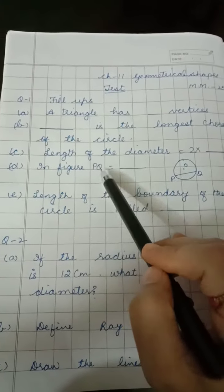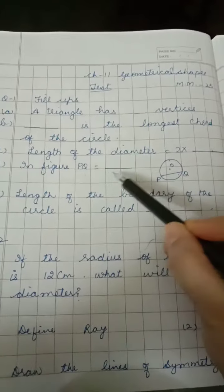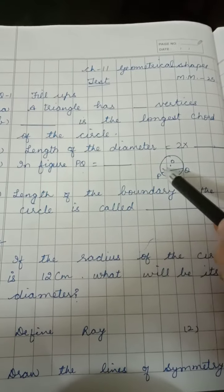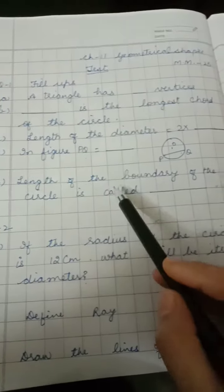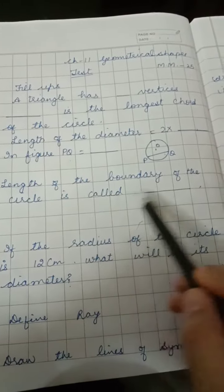D: In the figure, PQ is equal to ___. You have to write what is PQ here. E: Length of the boundary of the circle is called ___.